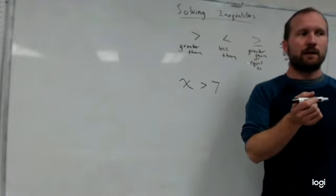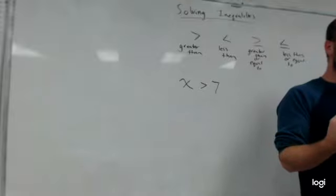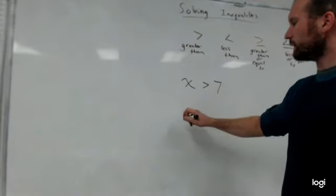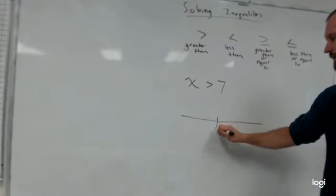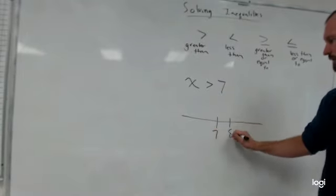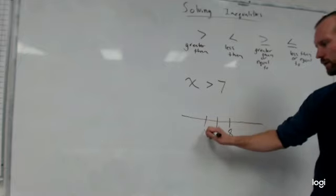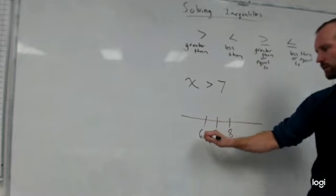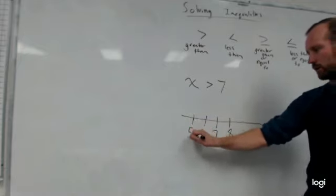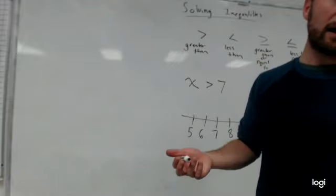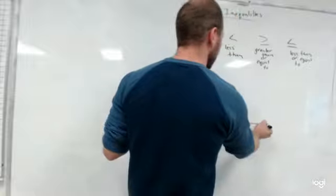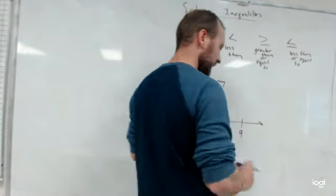So I can keep getting closer and closer to 7, and the way that we show this algebraically is we draw a number line. So let's say that 7 is right here on my number line. That would mean this is 8. What number would this be? 6. What would number that be? 5. What number would this be? 9. So I can draw a number line. This number line goes on forever. It doesn't end.